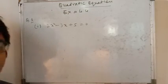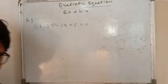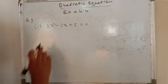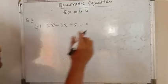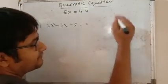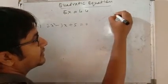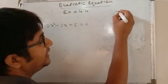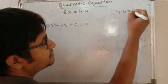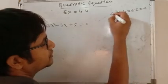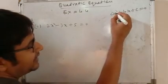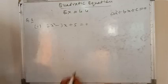First of all you have to say the nature of the roots. So how to do this? See, this is 2x² - 3x + 5. You have to compare with ax² plus bx plus c equals to 0.